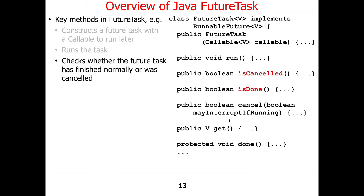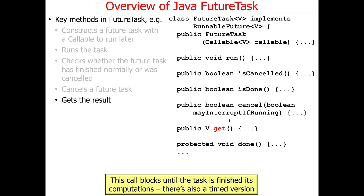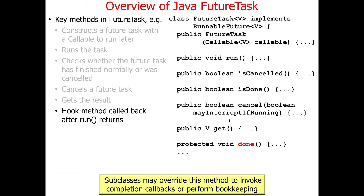You can check whether the task finished normally or was canceled, cancel it, and get the results. There are both timed and untimed get operations. There's also an interesting protected hook method called done, which by default is a no-op. But if you override it, you can invoke a completion callback or perform bookkeeping as a side effect. The executor completion service uses future tasks to take results when they finish and place them into a completion queue.